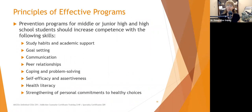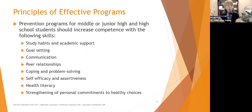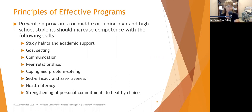Prevention programs for middle or junior high school students should increase competence with study habits, academic support, goal setting, communication, peer relationships, coping and problem solving, self-efficacy and assertiveness, health literacy, and strengthening personal commitments to healthy choices. When students get into junior and high school, thinking about Piaget, they are on a more formal operational basis. They're able to more effectively set goals — a five-year-old can't set long-term goals, but a fifteen-year-old is much more adept at that.